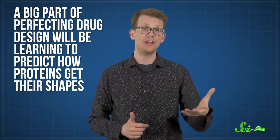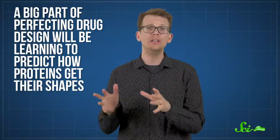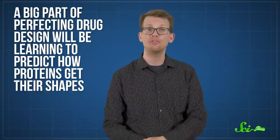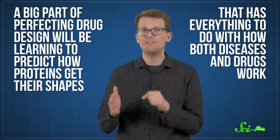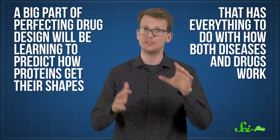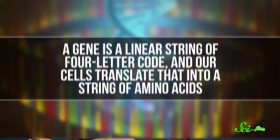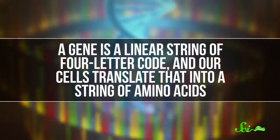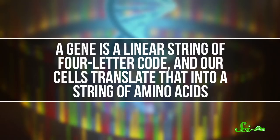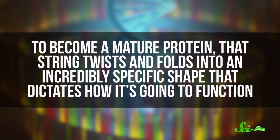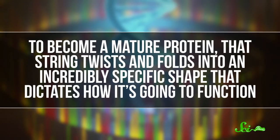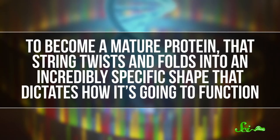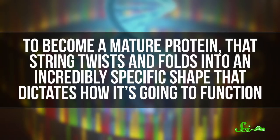A big part of perfecting drug design will be learning to predict how proteins get their shapes, because that has everything to do with how both diseases and drugs work. Genes in our DNA code for proteins. A gene is a linear string of four-letter code, and our cells translate that into a string of amino acids. To become a mature protein, that string twists and folds into an incredibly specific shape that dictates how it's going to function.